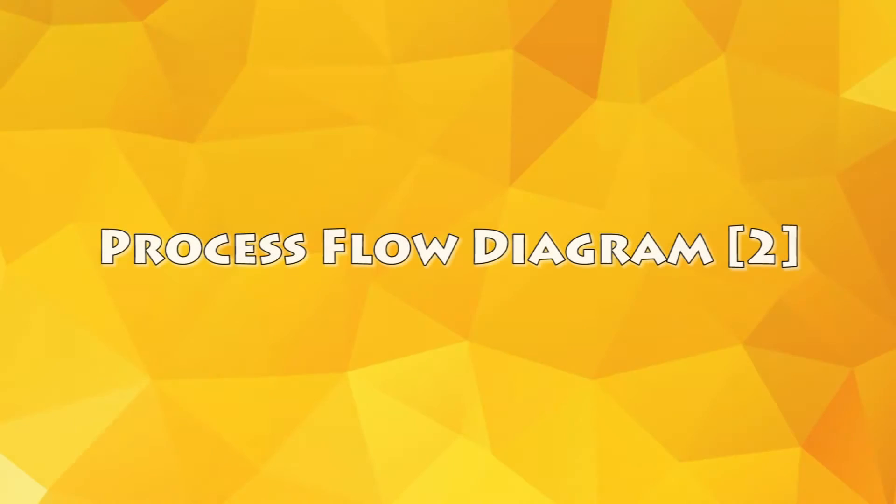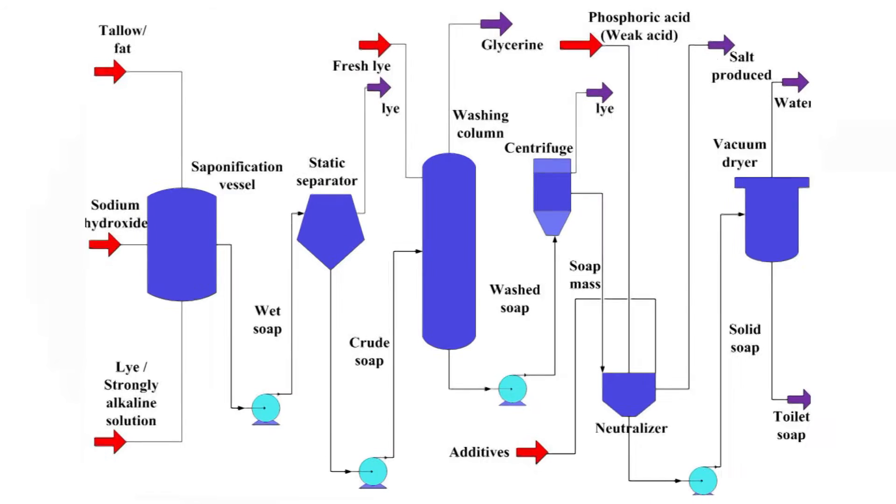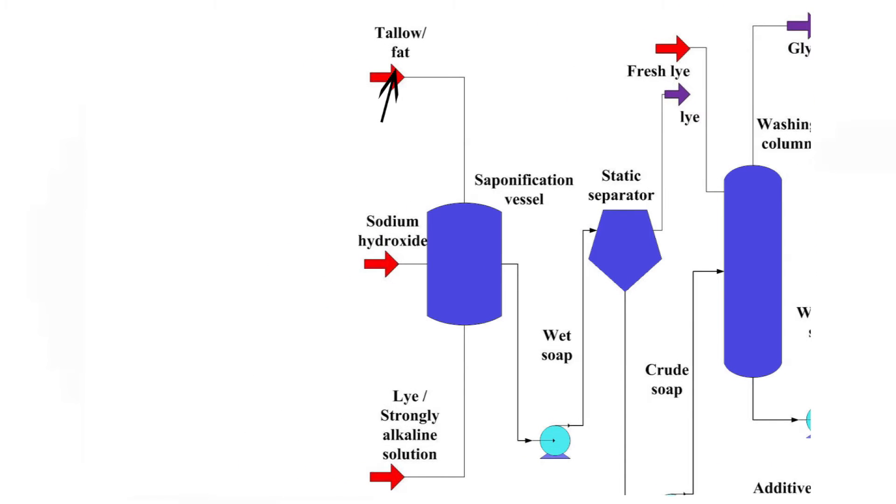The process flow diagram for typical continuous full-boiled saponification process is shown. The prime source for the process is beef fat, which also can be called tallow.